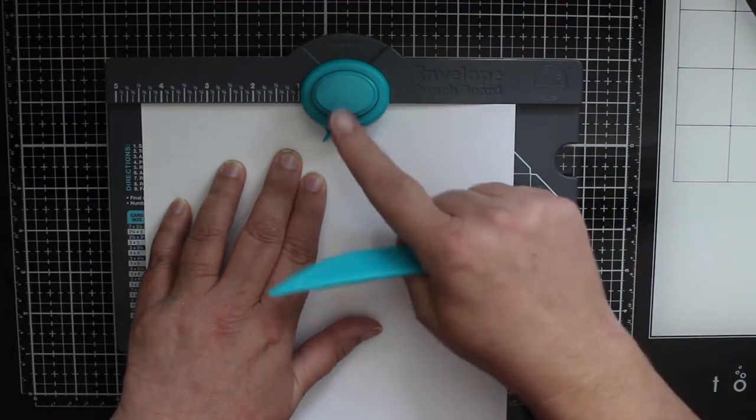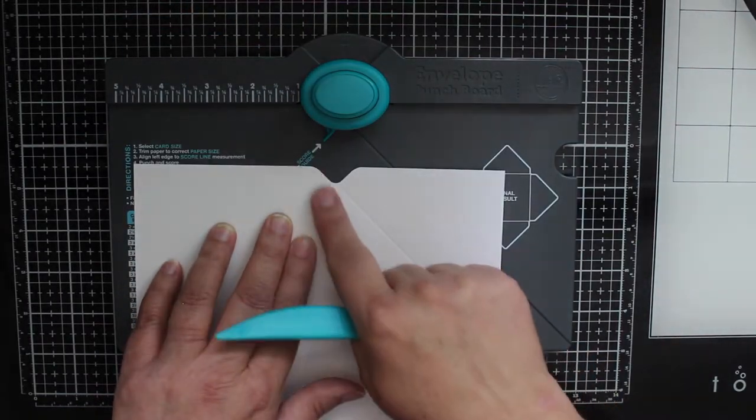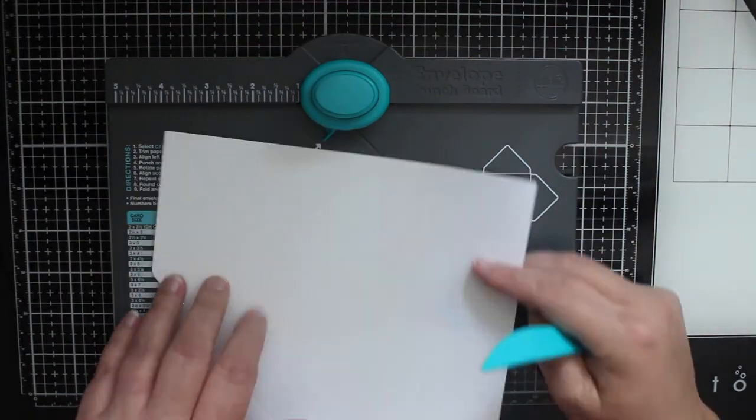At this point I'll also punch the paper by pushing down firmly on the blue button. You can see a notch in the paper that will assist me later.